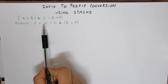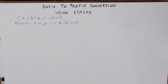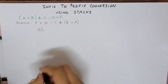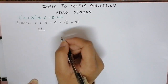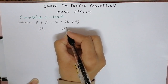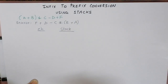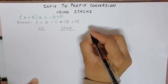After reversing the expression, before applying any logic, directly create a table. The columns of the table should be: first, the character — we will visit this expression character by character; second, the stack — what character we are going to put in the stack; and the final column is our output expression.